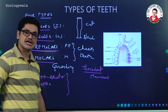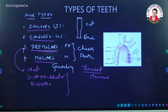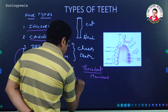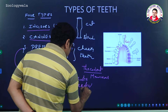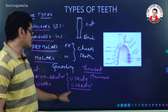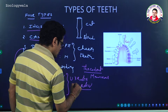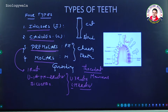Now let us look at molars — how many roots and cusps are present. Molars are the grinding teeth present in the jaw bone. Upper molars have three roots, whereas lower molars have two roots. This is a very important point. That is all about molars and premolars.